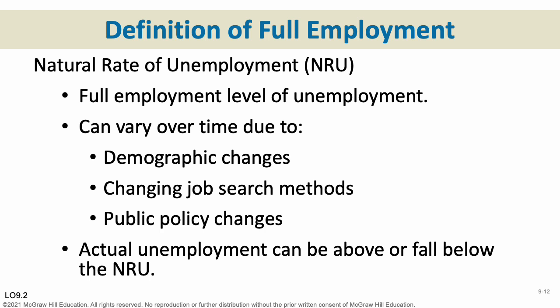Full employment: you can never have the entire workforce employed at any one point in time. Full employment in an economic sense is some measure of where we expect our unemployment rate to be. In the United States, it's generally around 4% unemployment at any given time — what we consider full employment or the Natural Rate of Unemployment (NRU). The NRU is the amount of unemployment you expect to see at any given time. It can vary over time due to demographic changes, changing job search methods, and public policy changes. When unemployment starts going above the NRU, that is a sign of a recession and bad economic times.